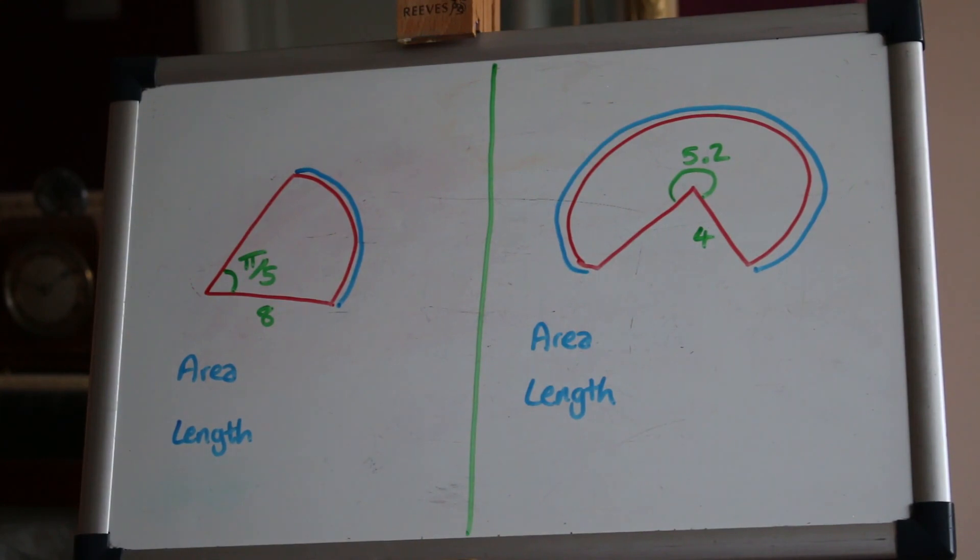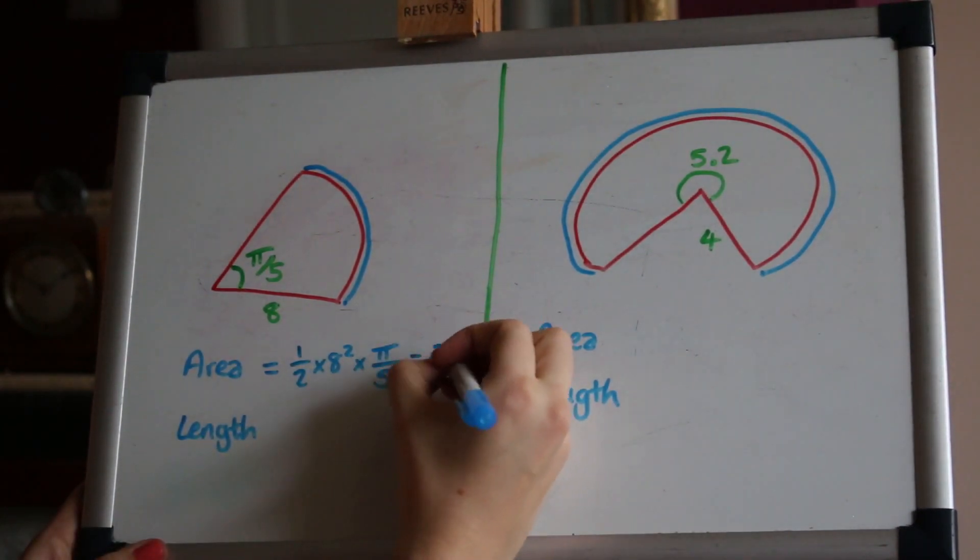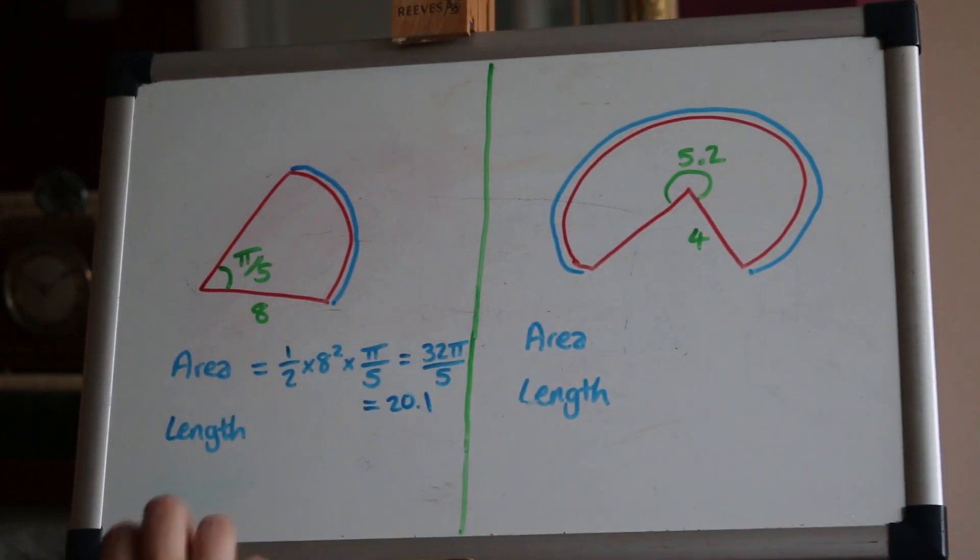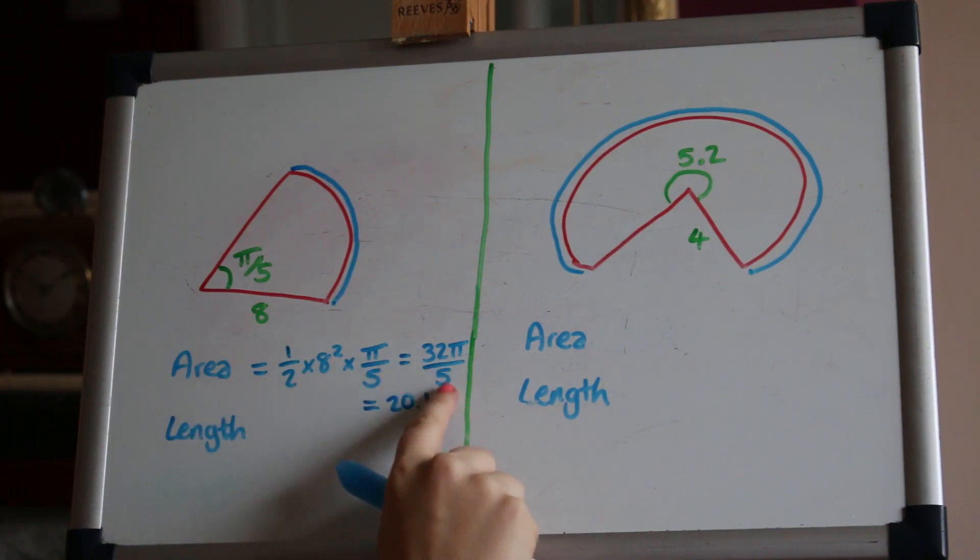So let's work these out using the new formulas. So this area, a half r²θ, I've times them together and you can leave it as an exact answer in terms of π, 32π over 5, or if you really want to convert it to a decimal then you lose some accuracy but you could give it to three significant figures, 20.1 and this could be in centimeters squared or whatever units you're using.